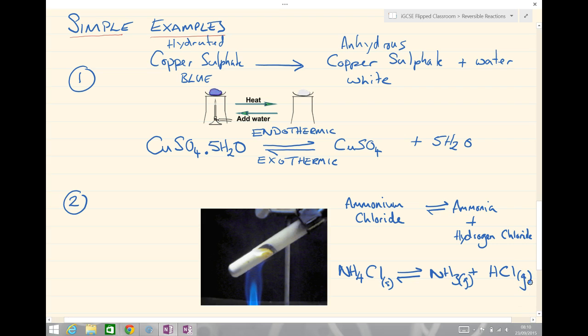We can see a demonstration, or at least a picture here, of the reaction. And we can see we're heating it. So, ammonium chloride, going to make ammonia and hydrogen chloride. Is that endothermic or exothermic? That's right. It's taking energy in. So, endothermic. From left to right. And from right to left, if it was going in the other direction, is exothermic.